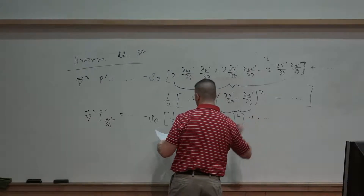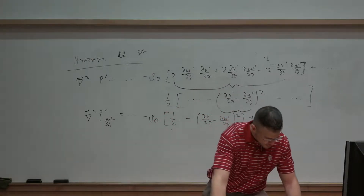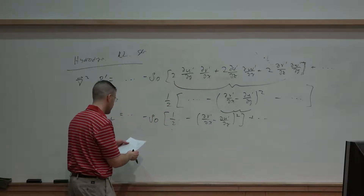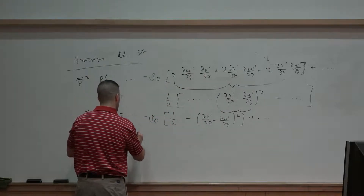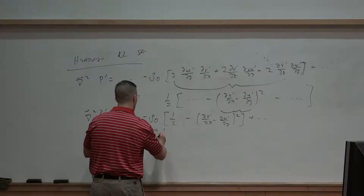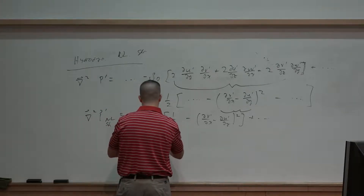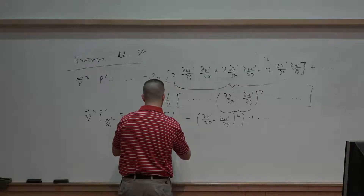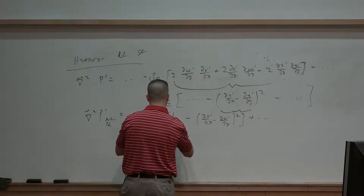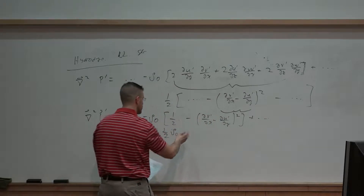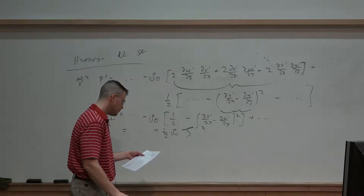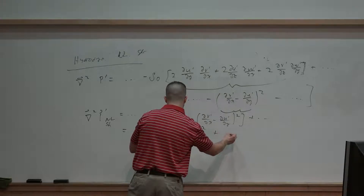The equation becomes: del squared p prime equals a bunch of terms minus rho naught times one-half times (minus ∂v'/∂x minus ∂u'/∂y) squared, plus dot dot dot. Effectively, this right-hand side can be expressed as dot dot dot plus one-half times rho naught times ζ' squared, plus a bunch of other terms.